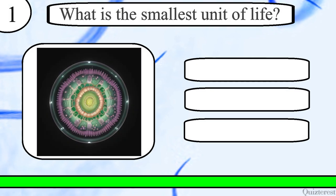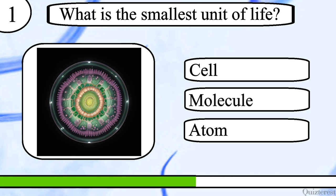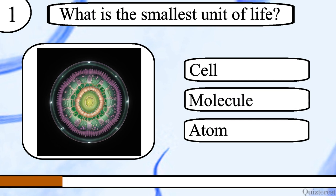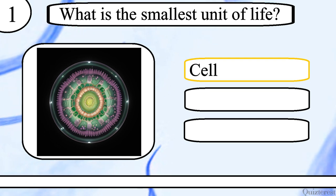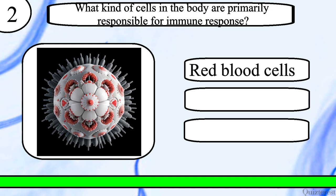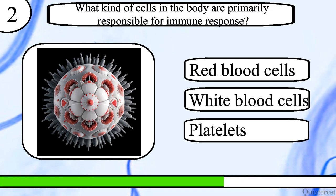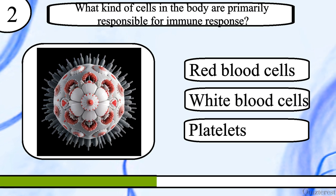Question 1. What is the smallest unit of life? Cell, molecule or atom? The correct answer is cell. Question 2. What kind of cells in the body are primarily responsible for immune response? Red blood cells, white blood cells or platelets?